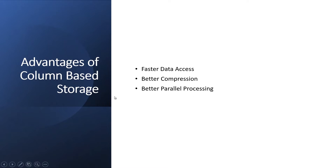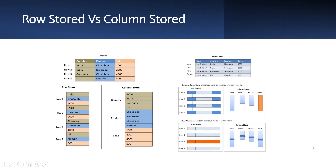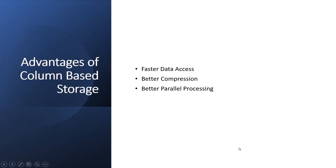Column storage also gives better parallel processing. In a column store, data is already vertically partitioned, whereas in row storage, data is horizontally partitioned. This means that operations on different columns can easily be processed in parallel. If multiple columns need to be searched or aggregated, each of these operations can be assigned to a different processor core.